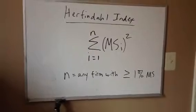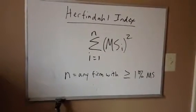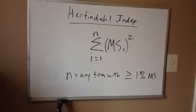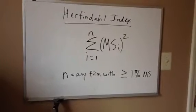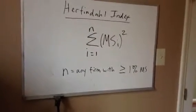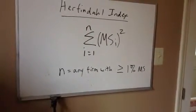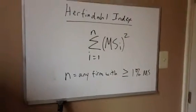And what do we have here? We have from the first company to the nth company. So we're going to square all the companies from the first to the nth. And how are we going to define n? We're going to define n as any firm with greater than or equal to 1% market share.